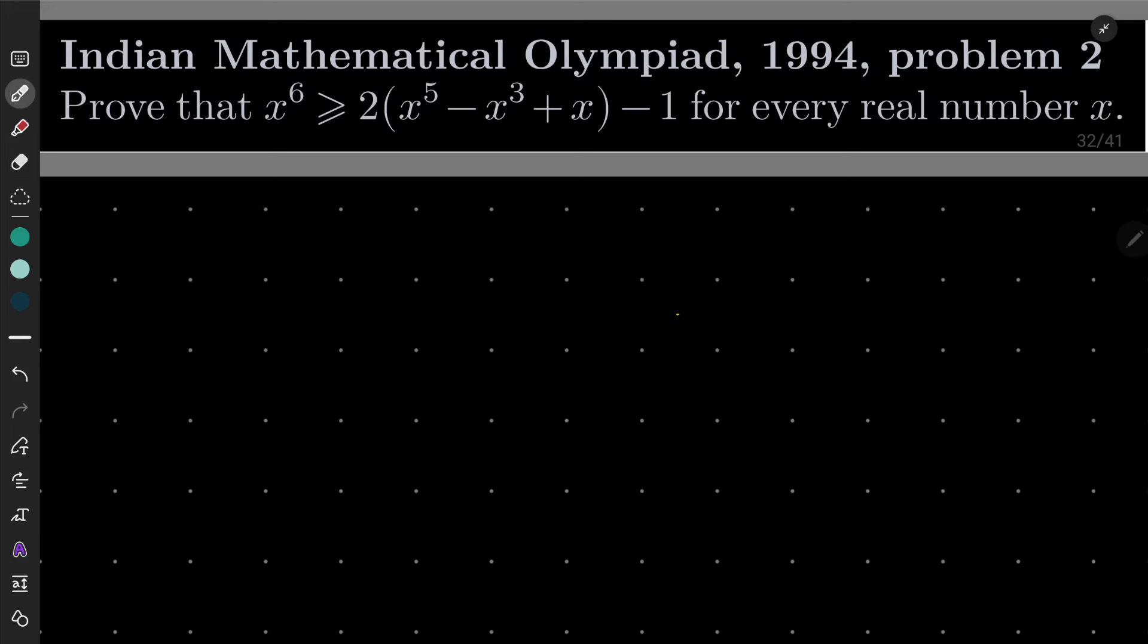Okay, so let's put everything on one side as I suggested: x to the power of 6 minus 2x to the power of 5 plus 2x cubed minus 2x plus 1.